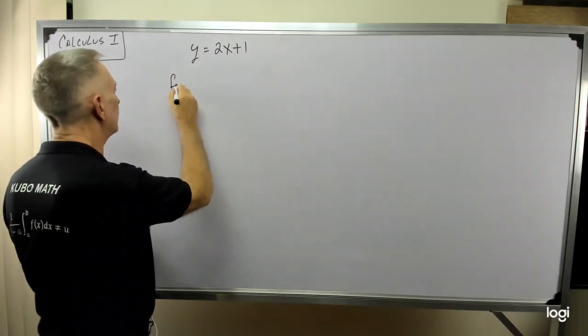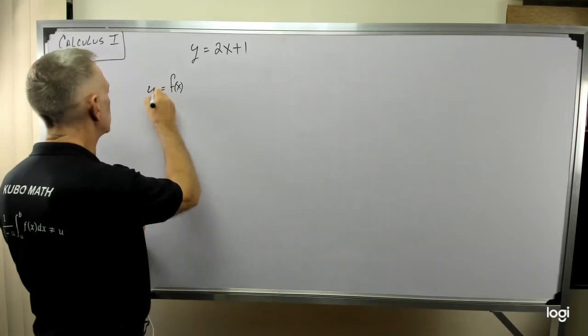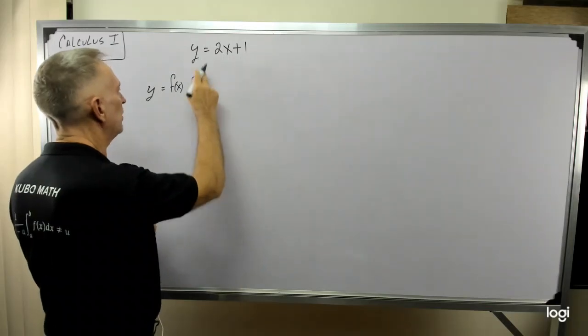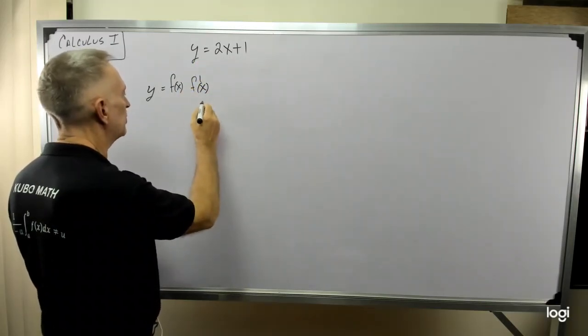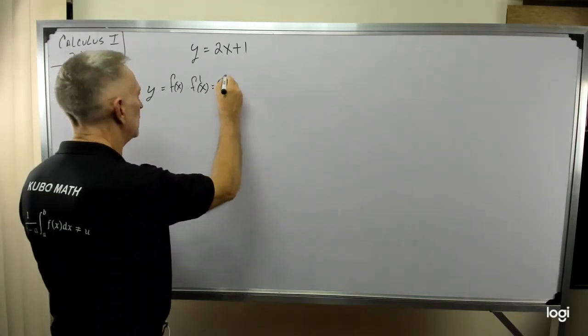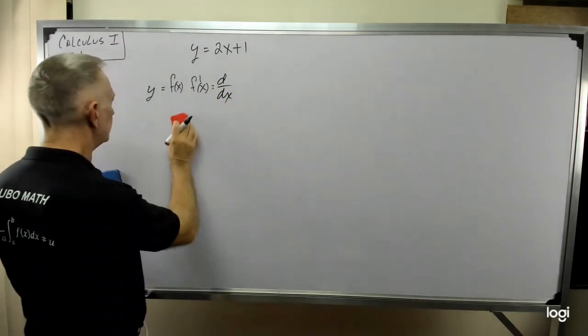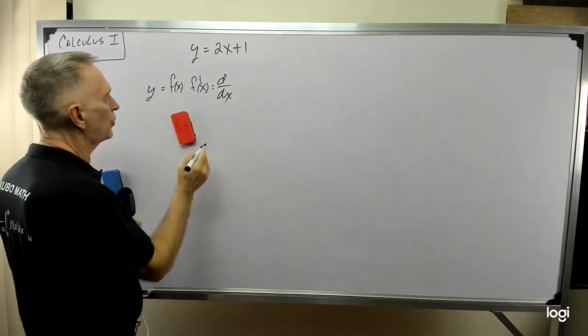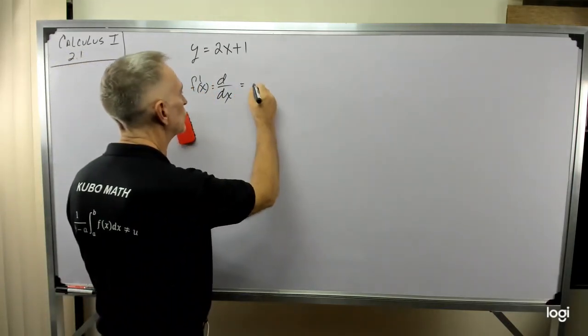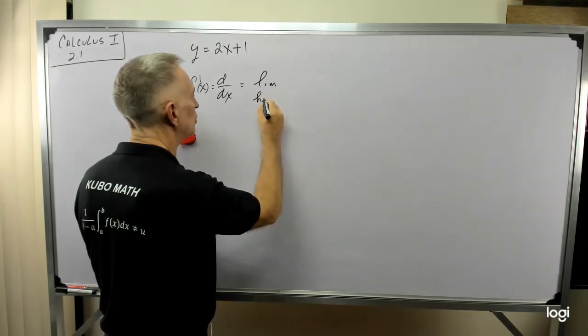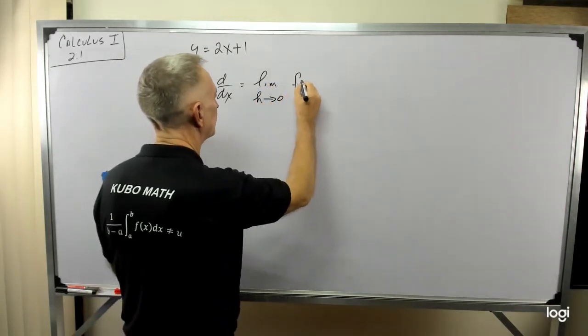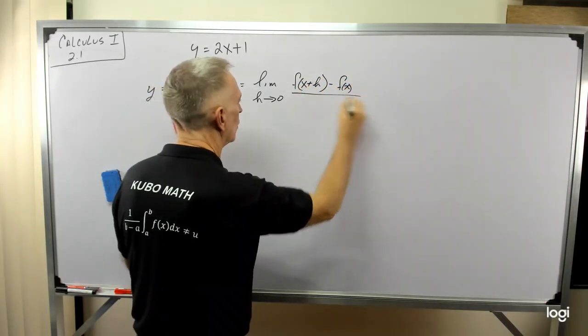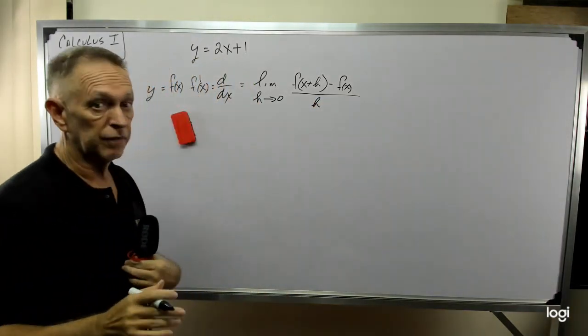If I take f of x equals y, so y equals f of x, but then f prime of x, the derivative of that equation with respect to x, it's also noted as derivative with respect to x. So I'm taking the derivative of f of x, f prime of x, or derivative of that equation with respect to x. That equals the limit as h approaches 0 of f of x plus h minus f of x all over h. So I'm sure in your study of limits you've had this.